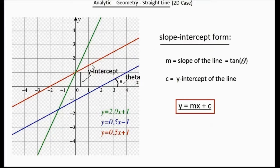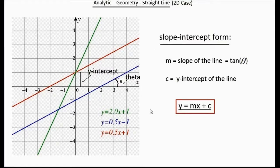Likewise, the red line has y-intercept equal to 1 unit and the green line also has the y-intercept as 1 unit. The equations of those two lines respectively are y equal to 2x plus 1 and y equal to 0x plus 1. So basically, we need to look at the angle the line makes with the x-axis. The tan of the angle defines the slope of the line, and the intercept the line makes with the y-axis is the constant c, which appears in the equation y equal to mx plus c. This is called the slope-intercept form of a straight line on the plane.